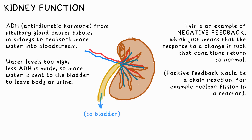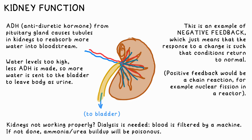This is an example of negative feedback. Negative feedback might sound like it's a bad thing, but all it means is that the body responds in such a way as to return things to normal. If your kidneys aren't working properly, dialysis is required — essentially your blood is sent through a machine that does the same job as your kidneys. If this doesn't happen, the buildup of urea can poison you.